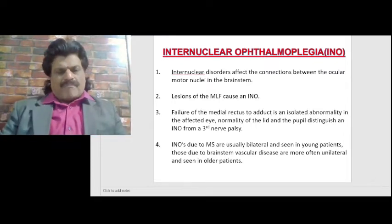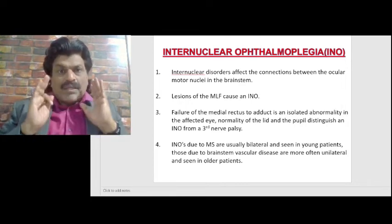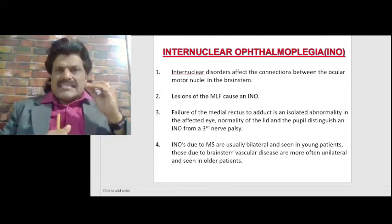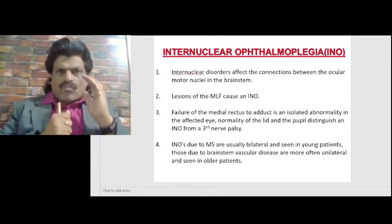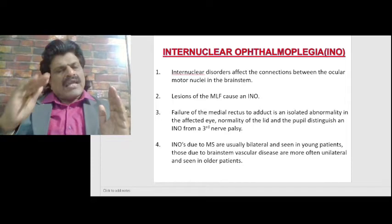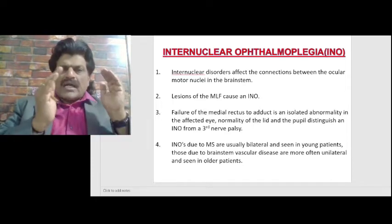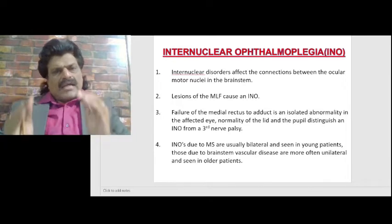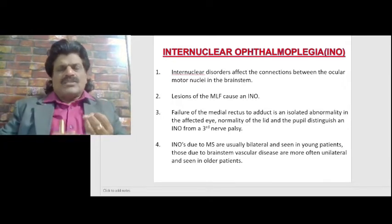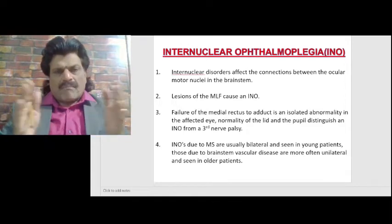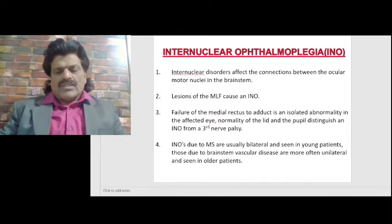INOs due to multiple sclerosis are usually bilateral and seen in young patients, while those due to brainstem vascular disease are more often unilateral and seen in older patients. So to differentiate: in the young, INO is usually due to multiple sclerosis and tends to be bilateral; in the old, it is due to vascular disease and is usually unilateral.